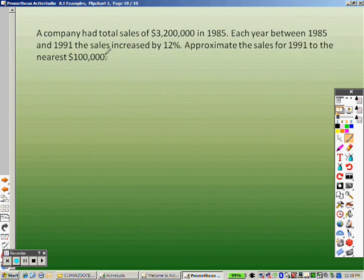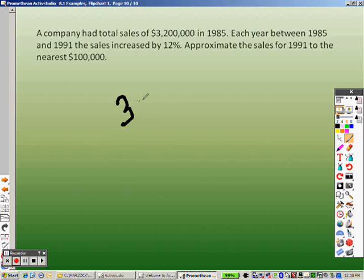A company had a total sales of $3,200,000 in 1985. Each year between 1985 and 1991, the sales increased by 12%. Approximate the sales for 1991 to the nearest $100,000. So, they're saying that each year it increased by 12%. Okay. So, we know what it's going up by each year. So, when we go to do this, the company total sales was that. So, that's when it started. 91 to the nearest. Okay. So, this is how much they're investing.